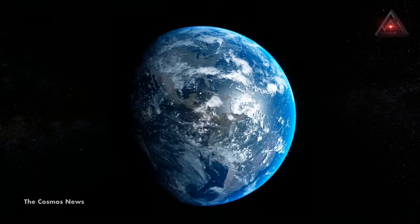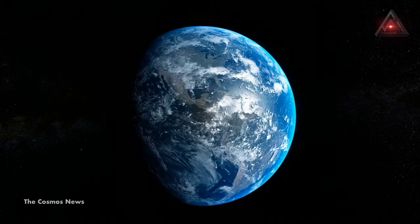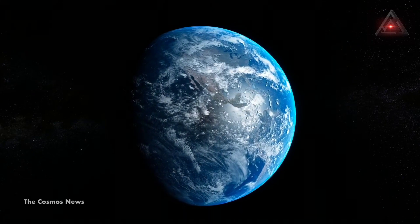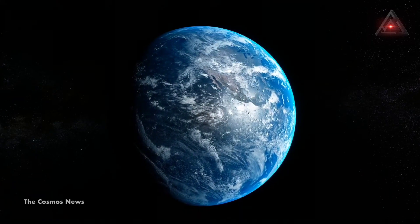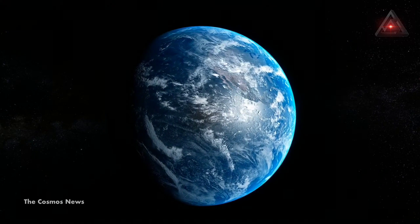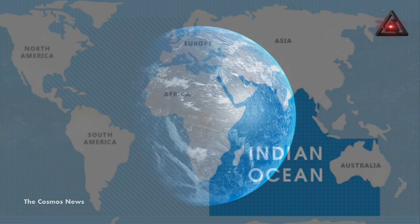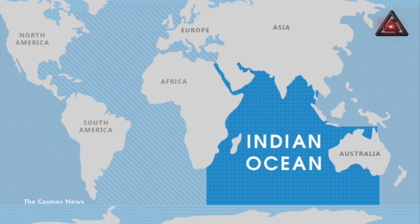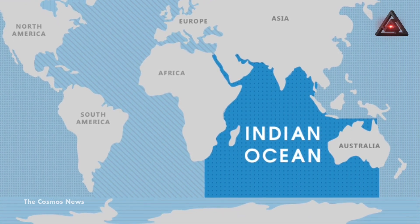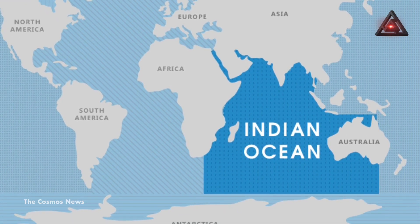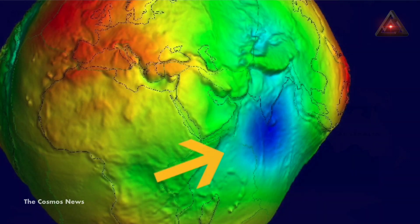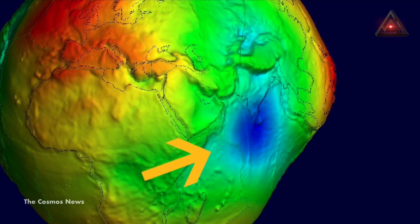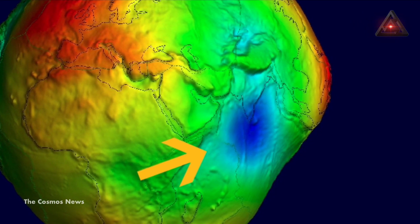In addition, scientists have also found that different regions on Earth exert different gravity depending on the mass of crust, mantle, and core layers beneath them. The new research assessed the origin of the low-gravity anomaly found in a large section of over 3 million square kilometers in the Indian Ocean seafloor.